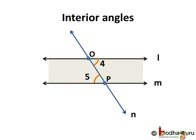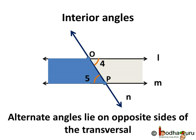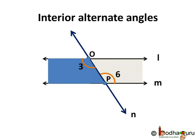Let's see angle 4 and 5. Clearly they are interior angles and they lie on the opposite sides of the transversal N — angle 4 on the right side and angle 5 on the left hand side. Such angles that lie on opposite or alternate sides of the transversal are called alternate angles. Since these are interior angles, we can say these are a pair of interior alternate angles. Similarly, angle 3 and angle 6 are interior angles that lie on the opposite sides of the transversal, so angle 3 and angle 6 are also a pair of interior alternate angles.